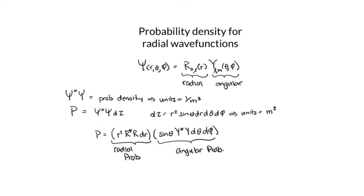The probability can be expressed as the volume element r squared dr sine theta d theta d phi times psi star psi, where I've split the wave function into the radial part, R star R, and the angular part, Y star Y. So we can write this in terms of a radial probability and an angular probability.